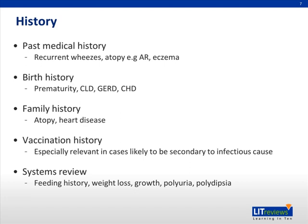A feeding history in a young child, such as gasping for air, vomiting and choking, worsening tolerance during feeding with gradually worsening respiratory distress can suggest heart failure. Polyuria and polydipsia can indicate metabolic causes.